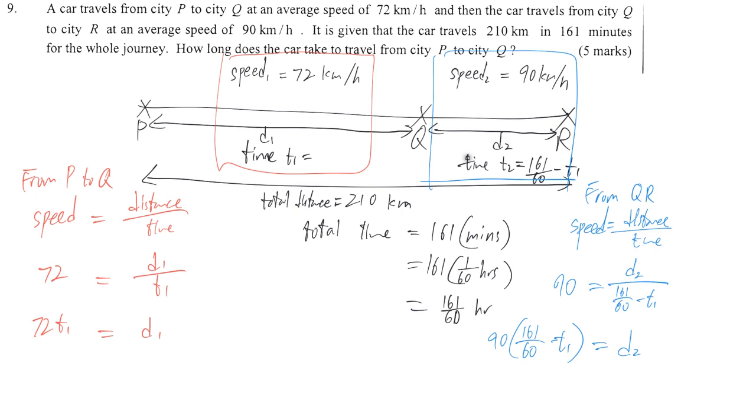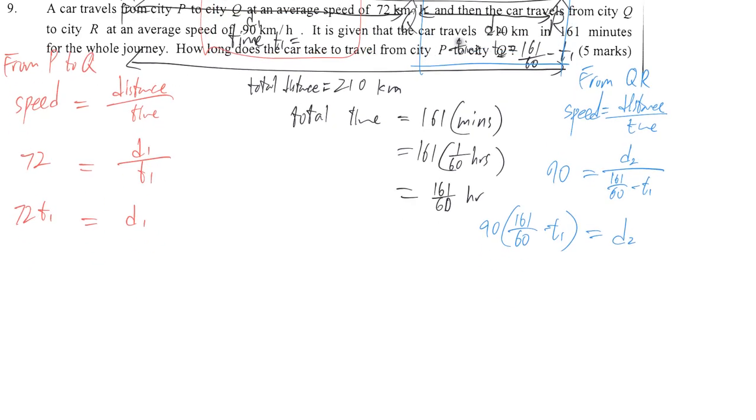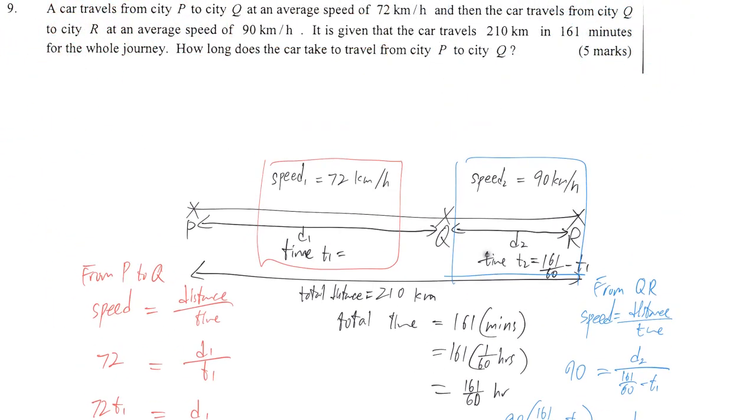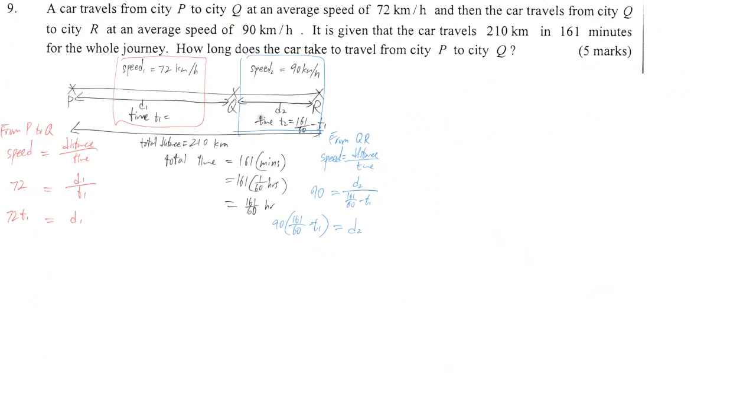And don't forget that we have the total distance here, we didn't use. So finally, we are going to write down since the distance is equal to 210, that means D1 plus D2 is equal to 210.